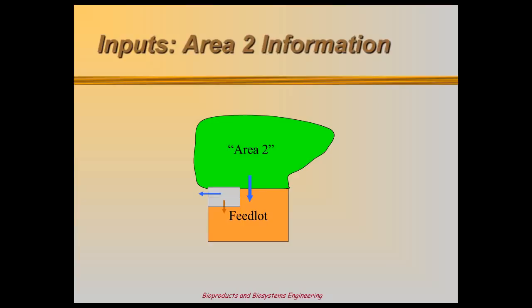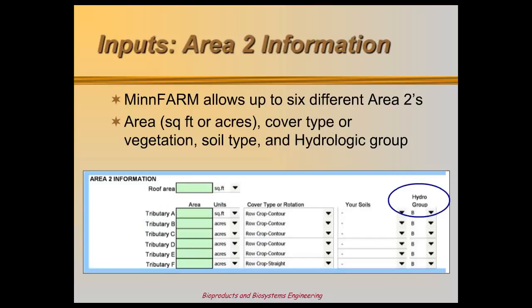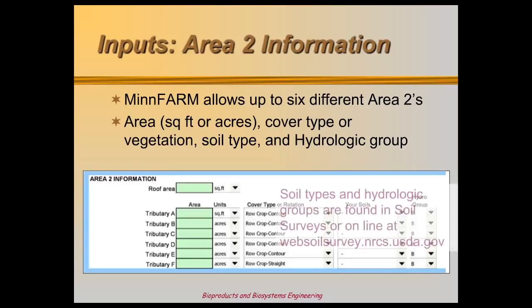Every building roof or land upslope that drains to the feedlot is considered as Area 2. These areas collect clean water that runs across the lot, often taking manure along the way, which can have a significant impact on model results. Up to six different Area 2 sources can be entered for each lot. Each Area 2 must be described with the area's size in square feet or acres, type of vegetation, and soil hydrologic group. The hydrologic group ranks soils from A through D, rating permeability — A soils have more sand and drain quickly, while D soils drain poorly. You can find more detailed soil information in soil survey books or online.